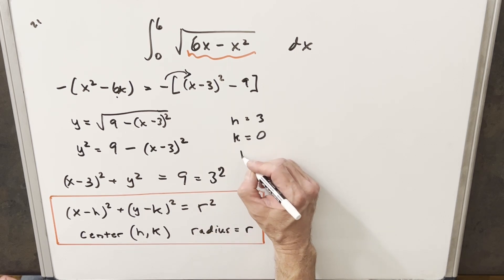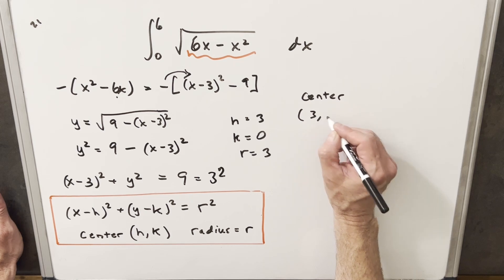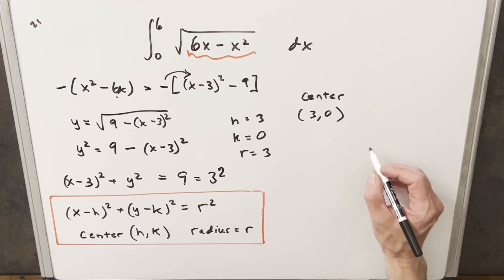So our r value or our radius is going to be just 3. So the center point of this circle is going to be at (3, 0). So we can write our point like that. And let me just graph that really quick.